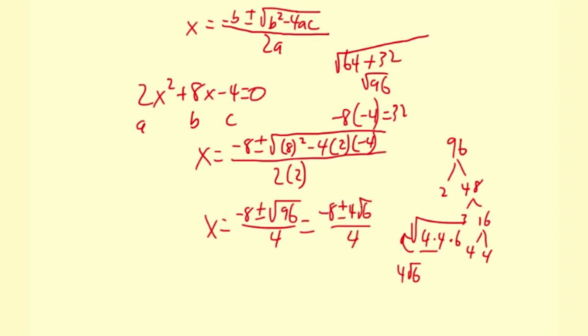Negative 8 plus or minus 4 square root 6 all over 4. This is actually the trickiest part, simplifying this fraction. What I like to do is split it up. So x equals negative 8 over 4 plus or minus 4 square root 6 over 4. This makes it much easier.